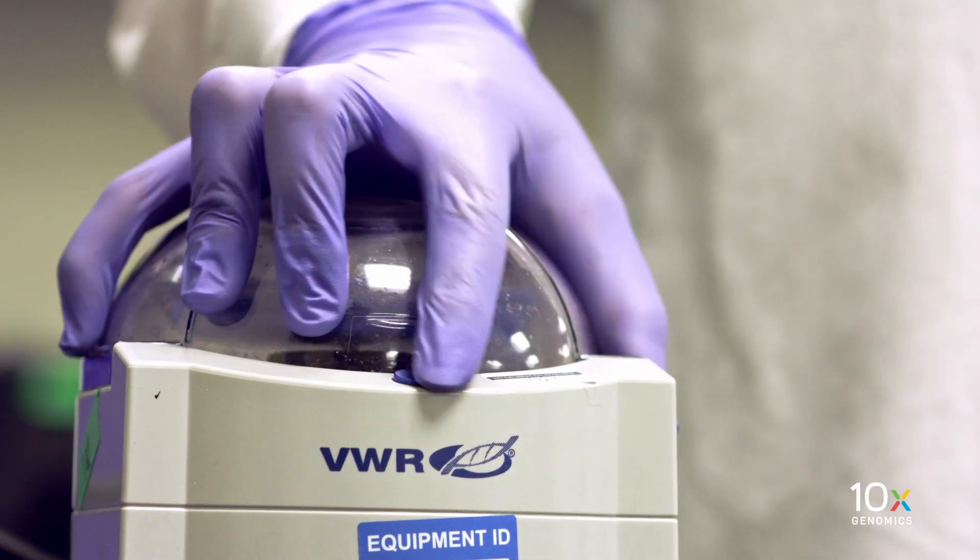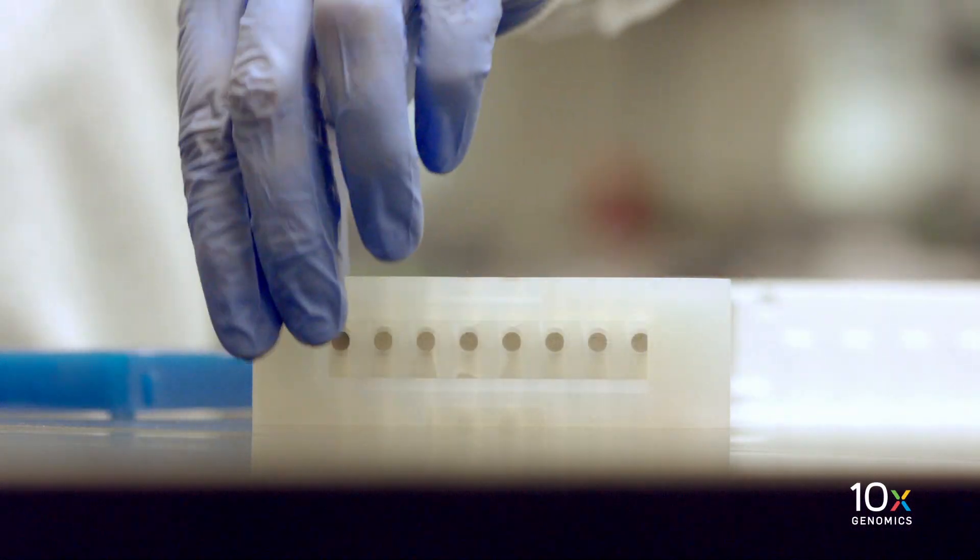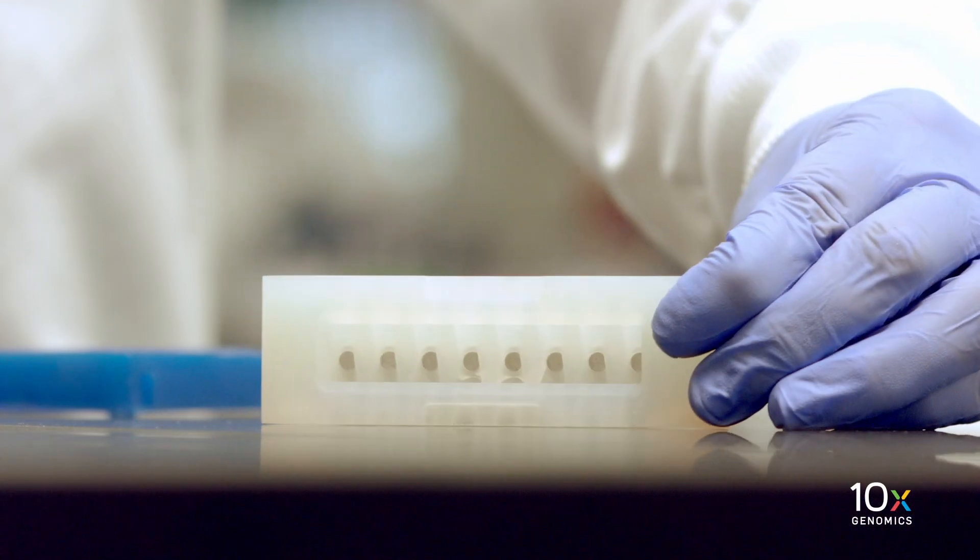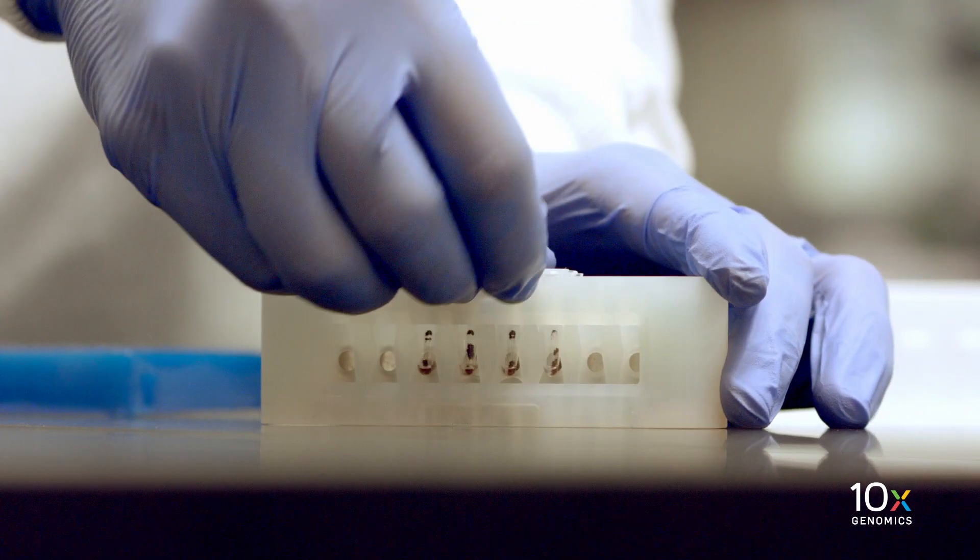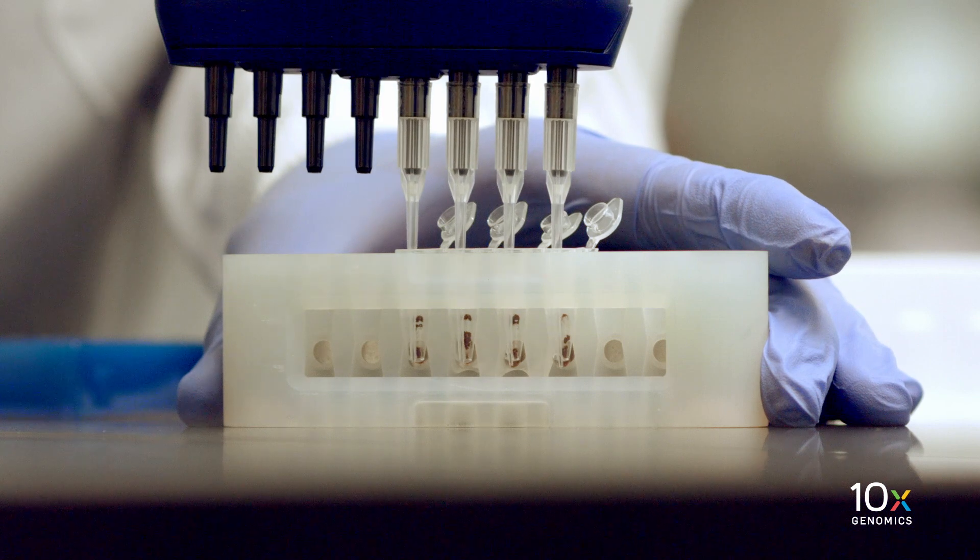Centrifuge the tube strip briefly, and return it to the 10x magnetic separator in the low position. Remove and discard any of the remaining ethanol, and allow the samples to air dry for one minute.